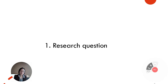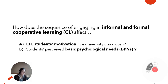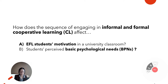First, my research question. This is: how does the sequence of engaging in informal and formal cooperative learning affect EFL students' motivation in a university classroom and students' perceived basic psychological needs presented in Ryan and Deci's Self-Determination Theory? I am interested in this question because although MEXT is calling for more active learning in classrooms, the desired outcomes of this in higher education have not yet been attained, as pointed out by Yasunaga 2019.